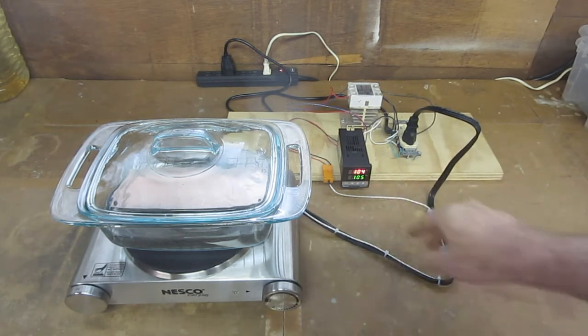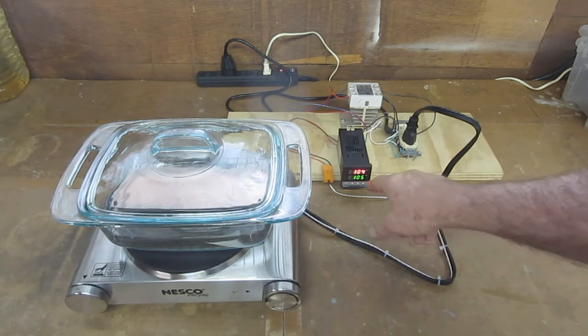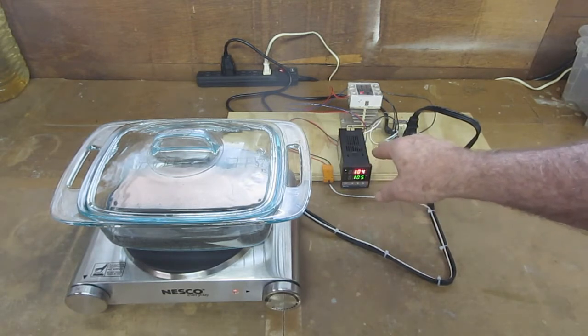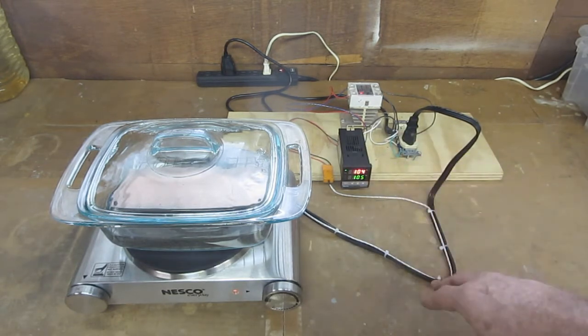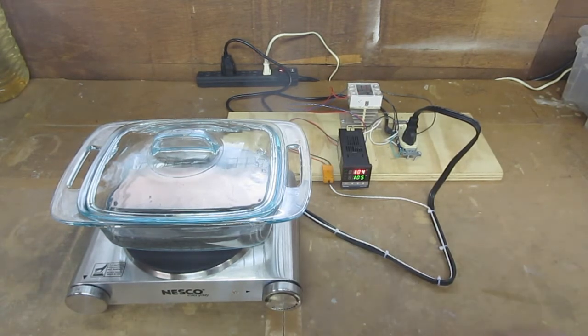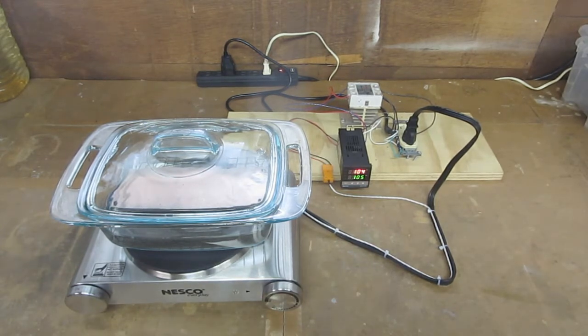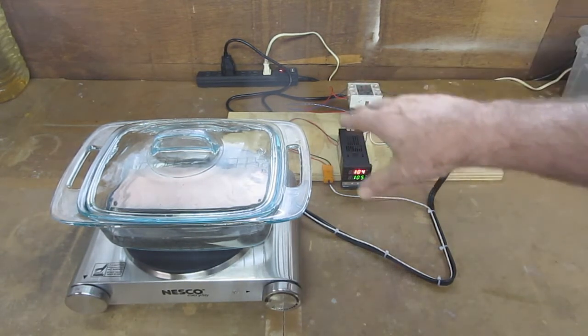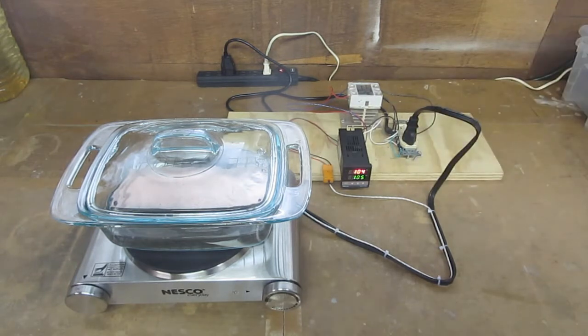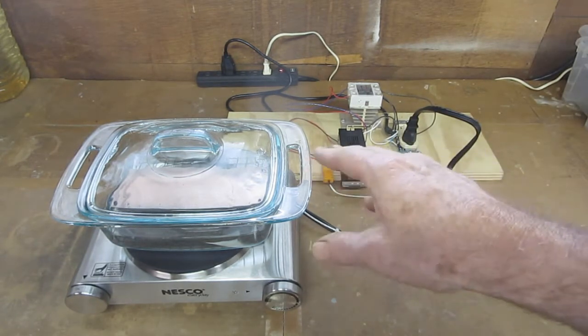The controller reads that information and turns the hot plate on and off as needed to maintain the temperature. These components are just arranged on a piece of plywood here to test the idea and see that it works. All of these components are going to be put inside an enclosure where it will be convenient and safe.